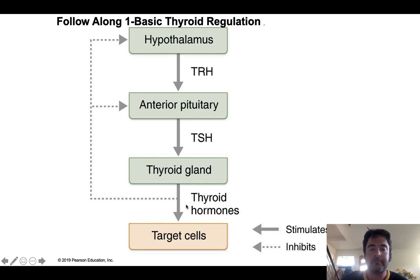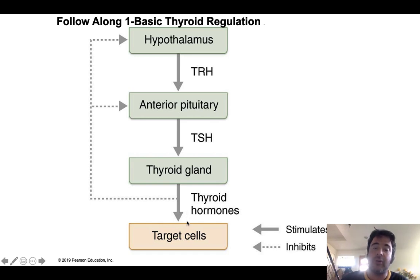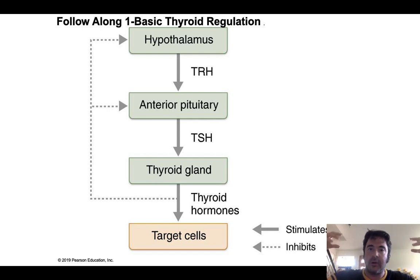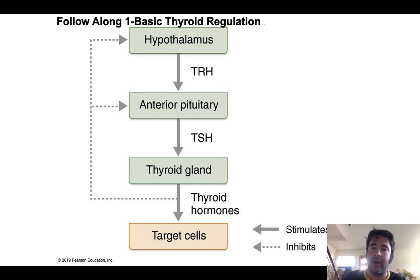Thyroid hormone then travels to a broad array of target cells — essentially every cell in the body is a target of thyroid hormone. It binds to these target cells and in general will increase metabolism, accelerating the rate at which chemical reactions take place, whether it be the breakdown of glucose, catabolism of lipids, or building of proteins. It upregulates metabolism, making it our primary metabolic regulator — a very important hormone day in, day out.